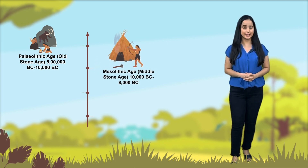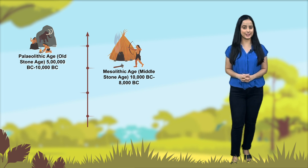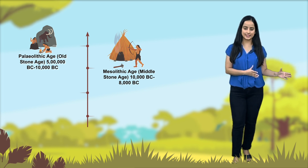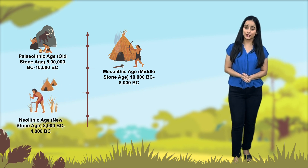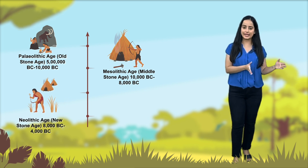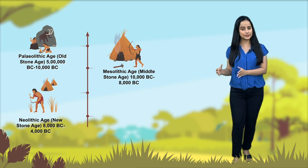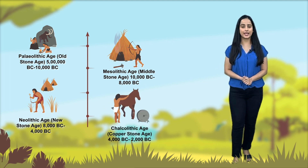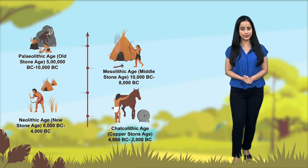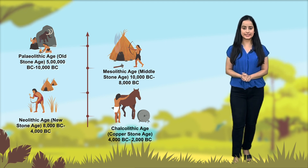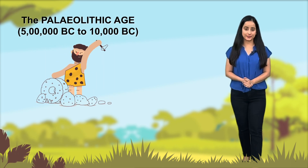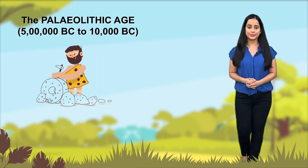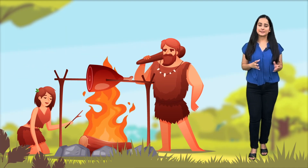The four phases of the Stone Age are: the Paleolithic Age (Old Stone Age, 50,000 BC to 10,000 BC), the Mesolithic Age (Middle Stone Age, 10,000 BC to 8,000 BC), the Neolithic Age (New Stone Age, 8,000 BC to 4,000 BC), and the Chalcolithic Age (Copper Stone Age, 4,000 BC to 2,000 BC).